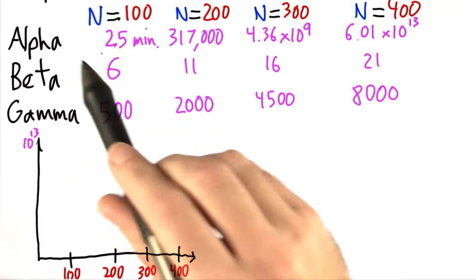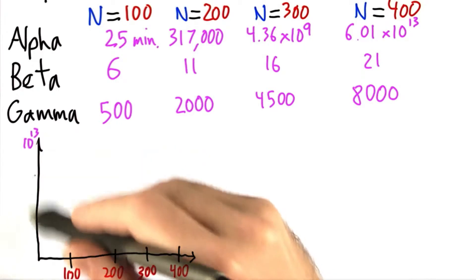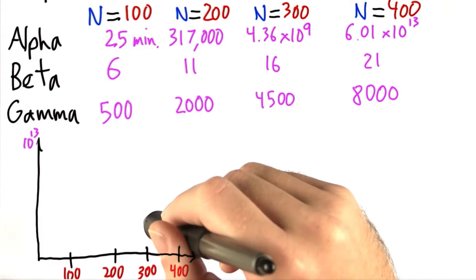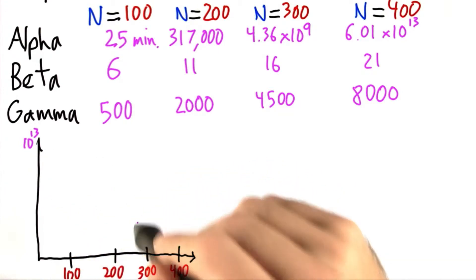Let's take a look at alpha first. Now alpha is still very tiny at N equals 100. And relative to this graph, it's still very tiny here. Here it's quite a bit bigger, but it's still compared to 10 to the 13th. 10 to the 9th is actually pretty small.